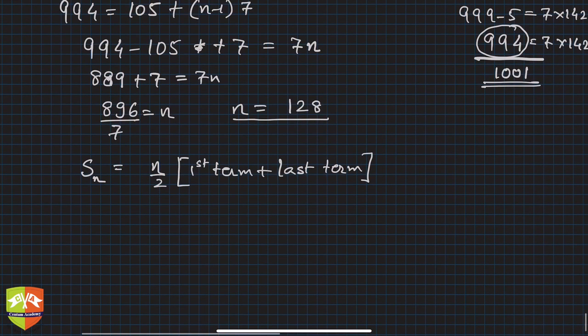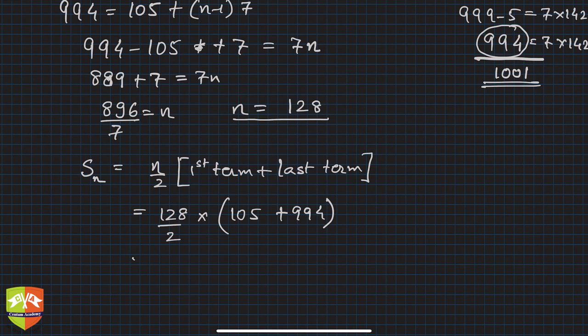So that means this is 128 by 2 into - first term was 105 and the last term is 994. So that means this is 64 into 105 plus 994, which is 1099.